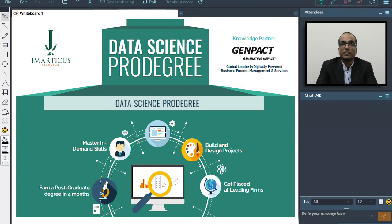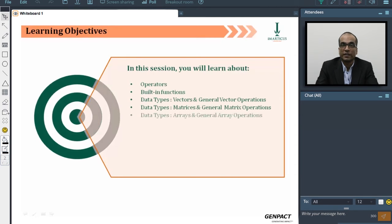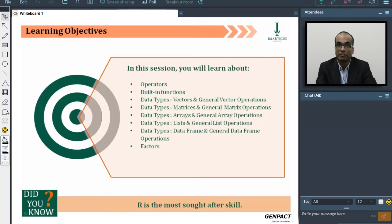We'll be talking about basic operations in R now. The learning objectives in this session would be understanding operators within R, built-in functions, data types including vectors and general vector operations, matrices, general matrix operations, arrays, lists, and data frames. We will also be touching upon factors as an aspect.